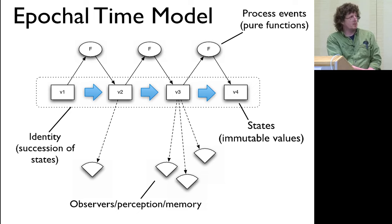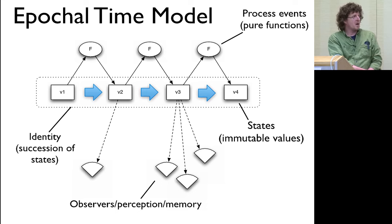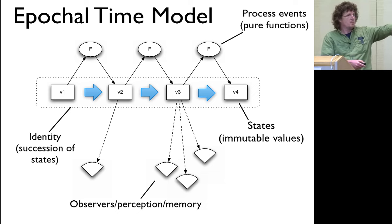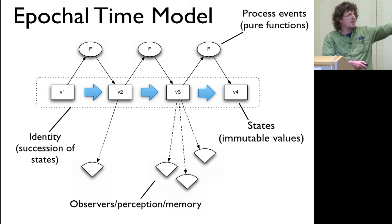What's critical about this is the separation between identity and state. The transformations act on the values themselves, not on the identity box. Similarly, there can be observers — the calculations and decision-making parts of our program — that also operate on the values, not on the box. When you adopt this model, it has many realizations: you can implement it with compare-and-swap, STM, or actors. The important thing is the separation of the value of an identity at a point in time and the identity itself, and the fact that observers and transformations act on values, not identities.